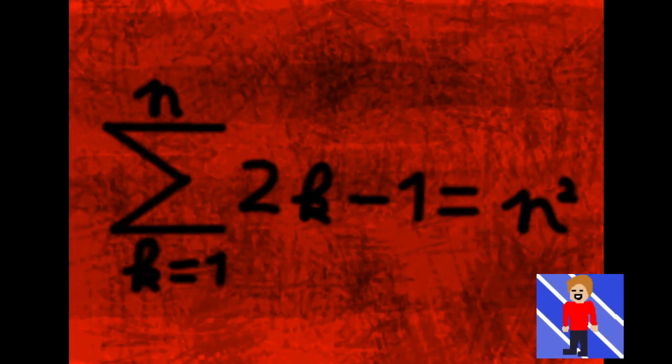So there is this fact, which if you've never heard of, it just means that n squared is equal to all the odd numbers added up until the nth odd number.